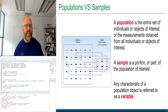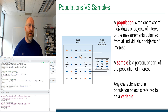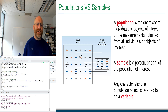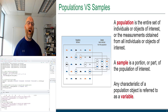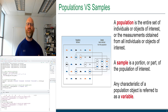To understand statistics, we need to know the difference between a population and a sample. A population is the entire set of individuals or objects of interest, or all measurements obtained from all individuals. A sample is just a subset or portion of a population. Any characteristic of a population is referred to as a variable, and we measure the value of a variable on each object to generate data.